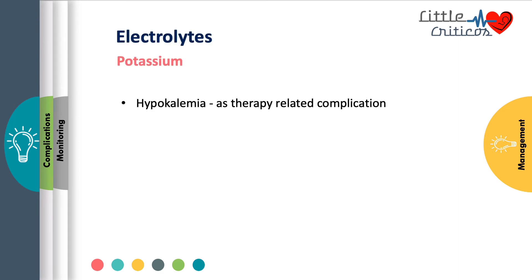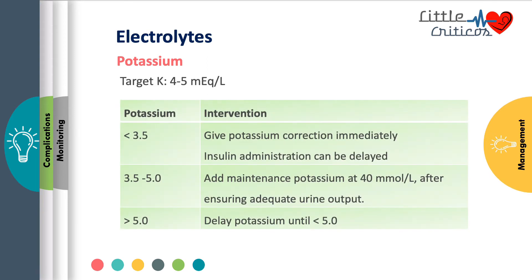The third important component in managing DKA is electrolyte imbalance management. Hypokalemia is quite common in children with DKA and worsens following insulin therapy, as insulin causes transcellular shift of potassium. Western literature reports an incidence of 4 to 10%, and it is quite high in the Indian population. Target potassium range is usually 4 to 5 mEq per liter. If potassium is less than 3.5, immediate potassium correction is required and insulin should be delayed. If potassium is between 3.5 to 5, potassium maintenance is added at 40 mmol per liter after ensuring adequate urine output. If potassium is more than 5, potassium administration can be delayed until levels fall below 5.